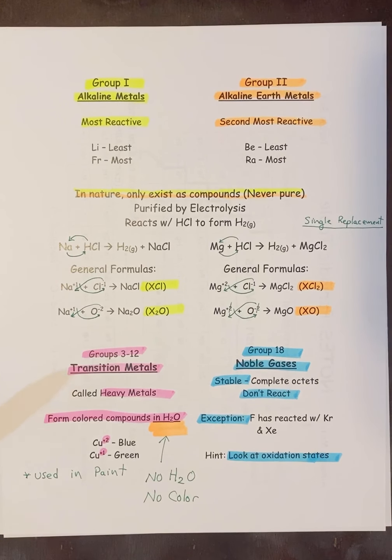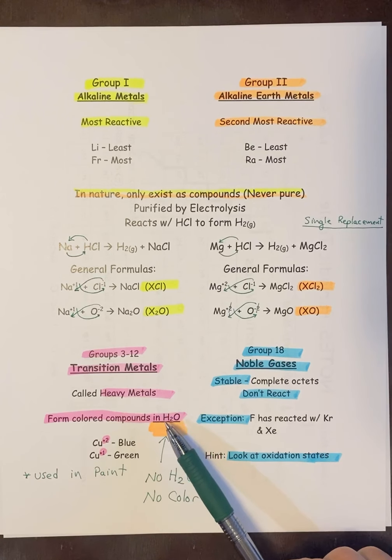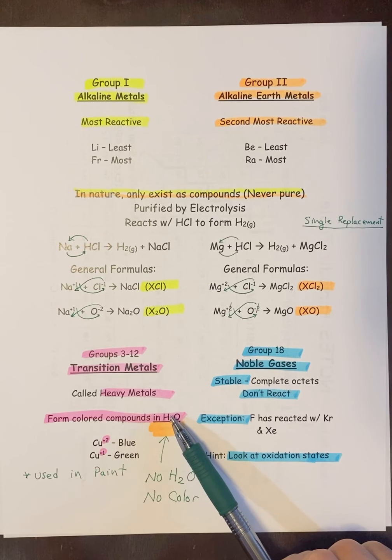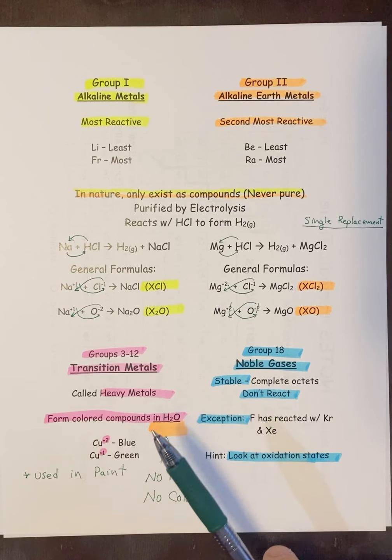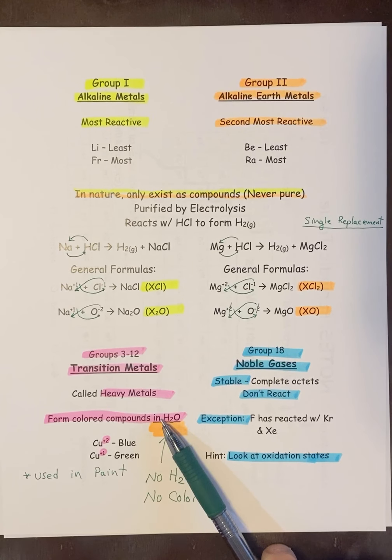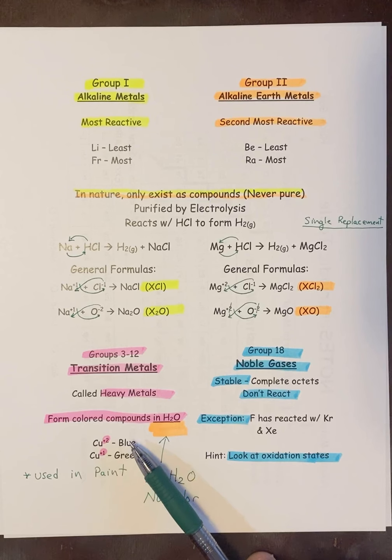So when you have a transition metal in a compound and you have water present in that compound, it doesn't have to be liquid water. It could be water that would look like it was dry to us, but at the molecular level there is water present. You get what's called a hydrate and those compounds tend to be colored. And their color can change depending on the oxidation state of the transition metal.